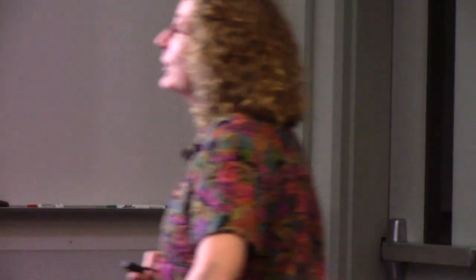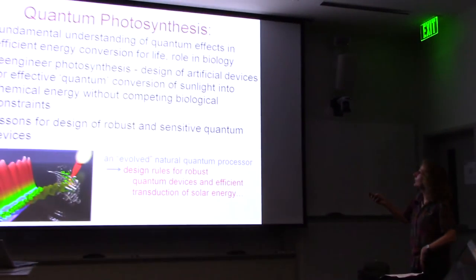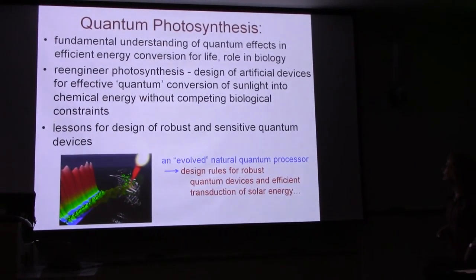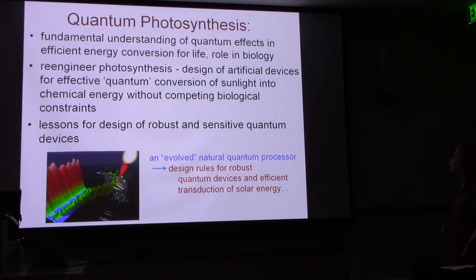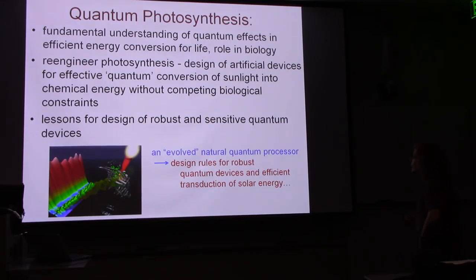So this is, I think where we are today. In terms, also in addition to understanding the role of quantum mechanics in biology, this kind of study also allows us to think about re-engineering photosynthesis, re-engineering in a more biological way than one is doing today with photovoltaics and so on. And it also gives us lessons for the design of robust and sensitive quantum devices. Because we have here what appears to be a truly evolved natural quantum processor.